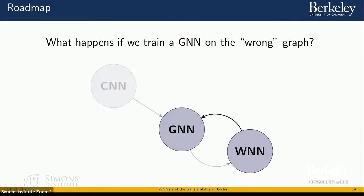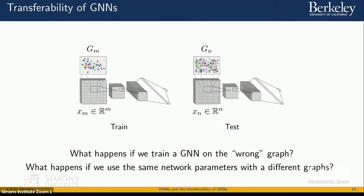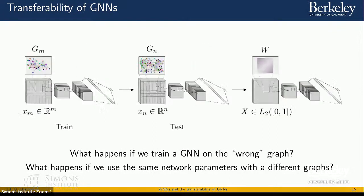We can use the graphon as a way to connect the training and test graphs. We say the two graph neural networks converge to the same graphon neural network — the graphs are sampled from the same graphon — and this gives us a way to control the structural properties of those graphs and say something about their outputs.